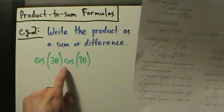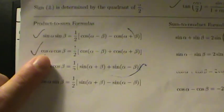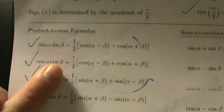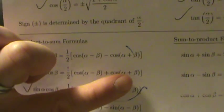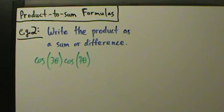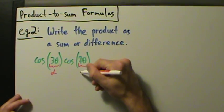Here we have cosine of something times the cosine of something else, so that's going to be this product-to-sum formula. Cosine α times cosine β equals 1/2[cos(α - β) + cos(α + β)]. That's the formula we're going to use, with 3θ as our α and 7θ as our β.